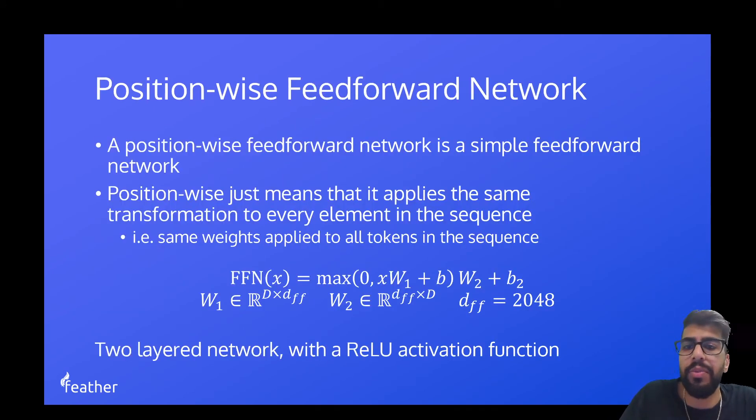Now the position-wise feed-forward network is actually just a simple feed-forward network. The position-wise just means that the same set of weights are applied to every element in the sequence. Okay so, I mean technically it's like applying just a 1d convolution over the sequence. Don't worry if you don't understand that. All we're saying here is like for every single element in our sequence, so we have t elements in our tensor or in one batch, we're going to apply the same transformation to every element in this tensor.